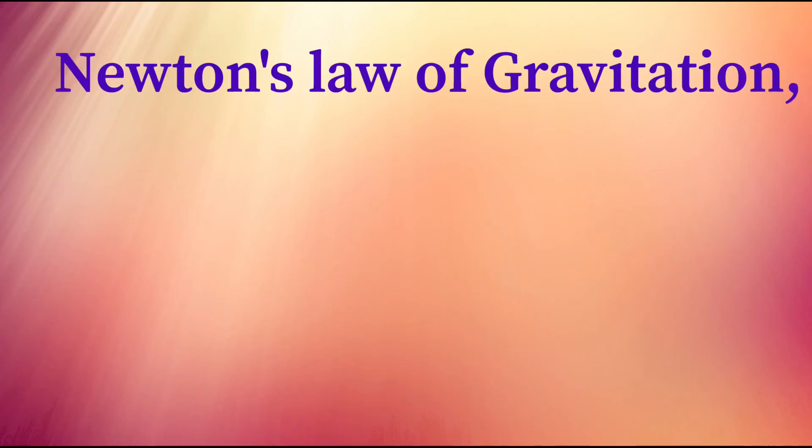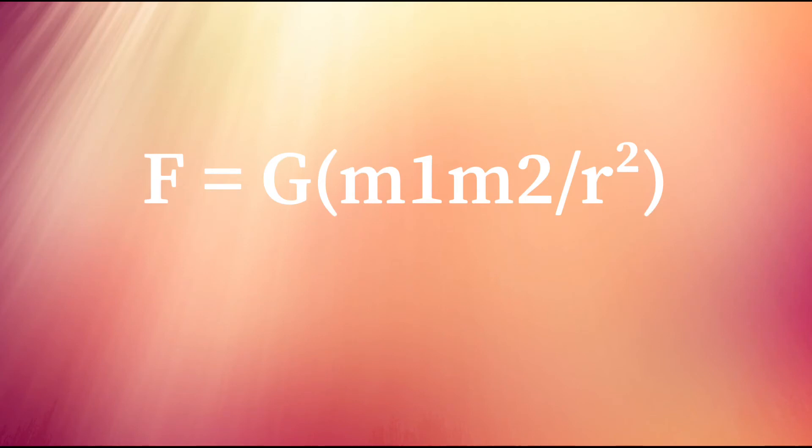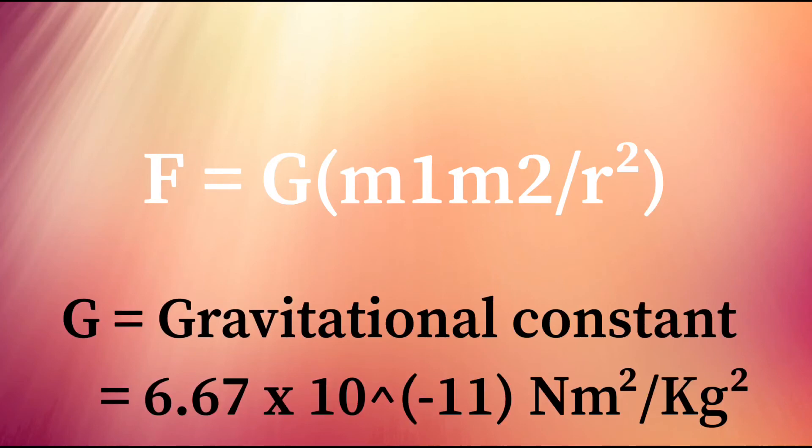Let's take an example of inverse relation from Newton's law of gravitation. The force between two objects of masses m1 and m2 at distance r apart is given as F equals G times m1m2 by r squared, where G is the gravitational constant whose value is 6.67 times 10 to the power negative 11 newton meter squared per kilogram squared.